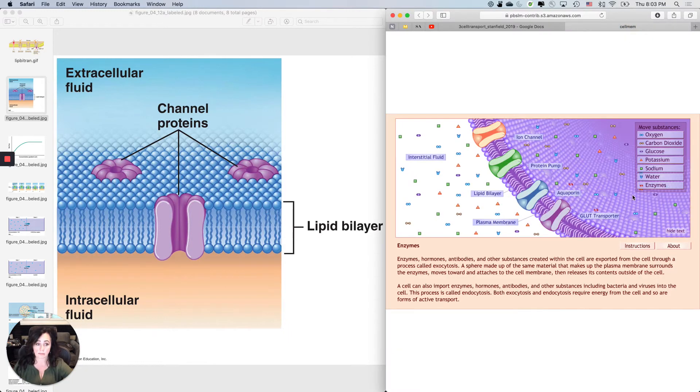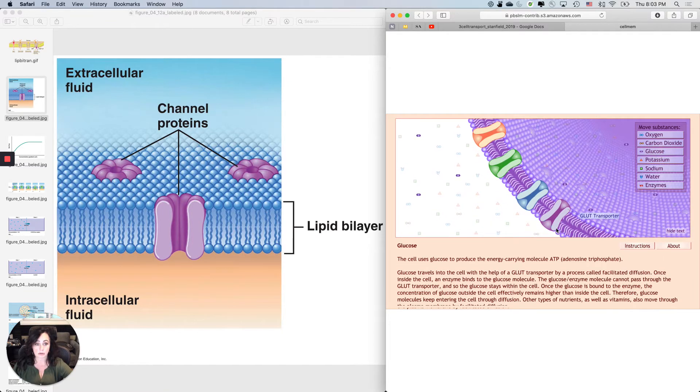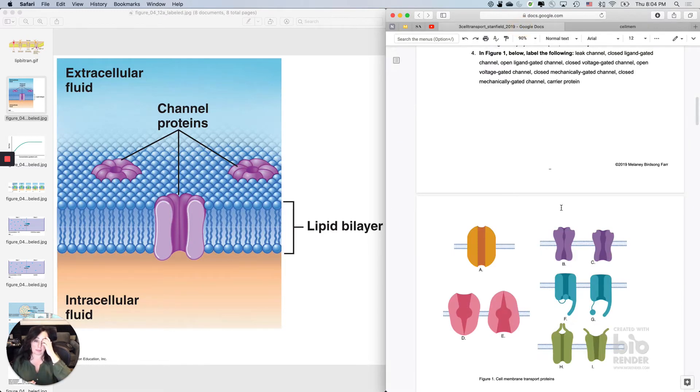So I'm going to show you a channel. Let's look at a potassium channel. The channel just stays in whatever state it is. And then I'm going to show you a carrier. So let's look at this glucose carrier. Notice that the glucose carrier changes conformation.